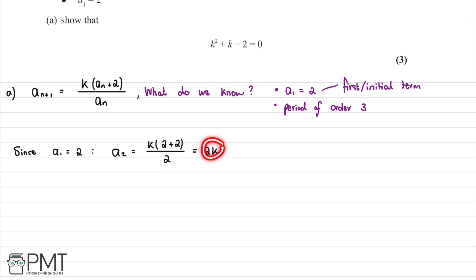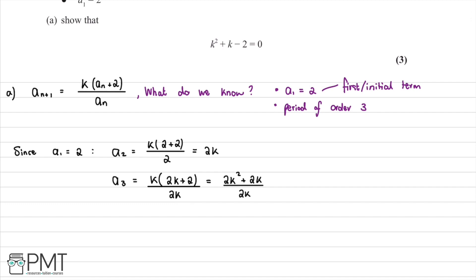Now we have a2 = 2k, so we substitute into the formula to find a3. That's k multiplied by a2 (which is 2k) plus 2, divided by 2k. Simplifying gives us 2k² + 2k all divided by 2k. Dividing everything by 2k, the 2k terms cancel, leaving us with k + 1. So a3 = k + 1.